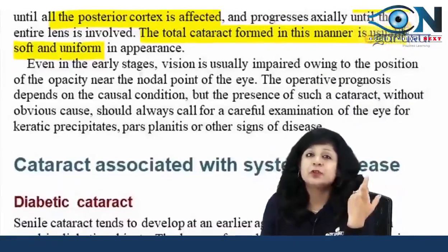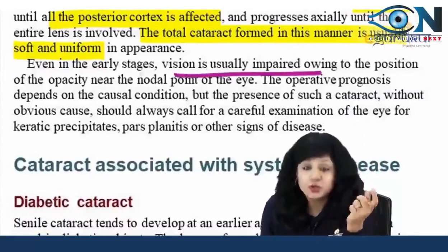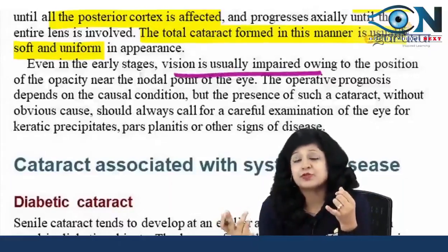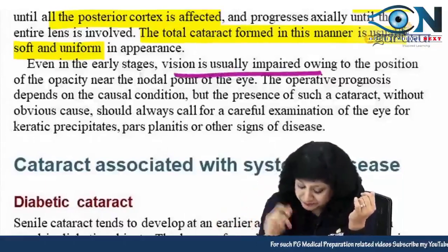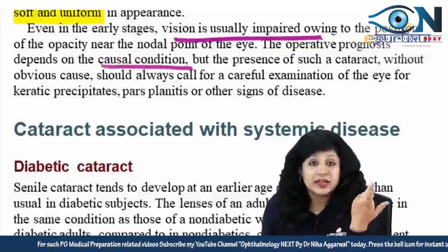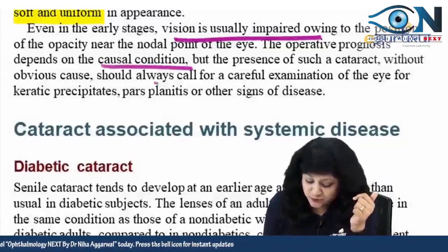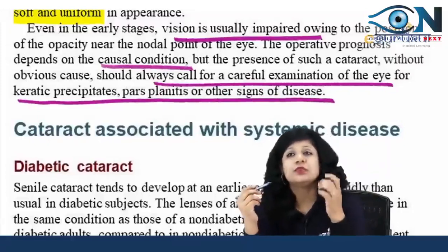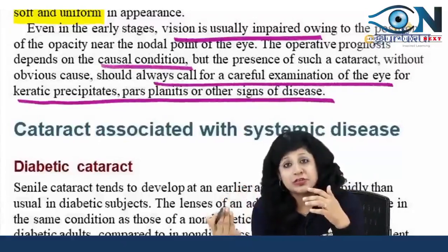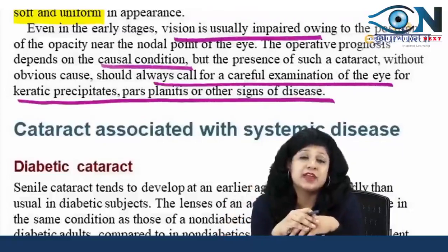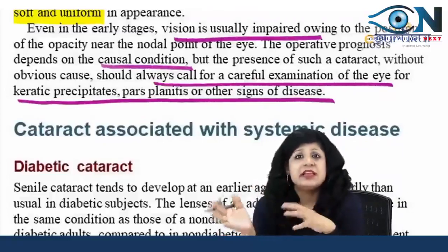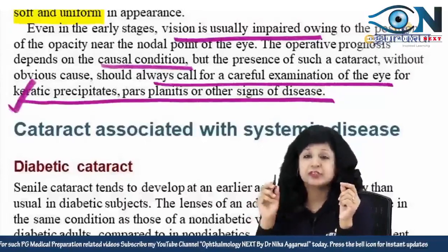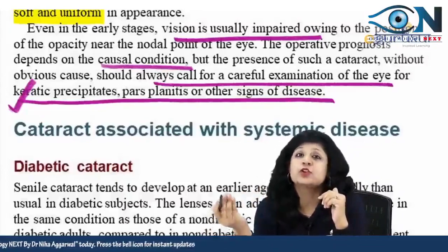Even in early stages, vision is impaired because of the position of the cataract — the posterior cortex or posterior subcapsular, which is near the nodal point. The operative prognosis depends upon the causative condition, but the presence of such a cataract should always prompt careful examination for KPs, pars planitis, and other signs of disease. Always look for keratic precipitates first, because the most common cause of complicated cataract is chronic anterior uveitis.